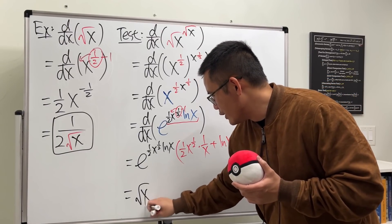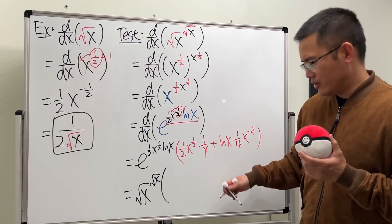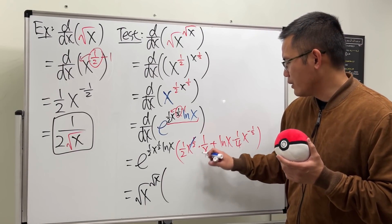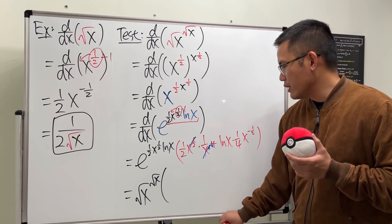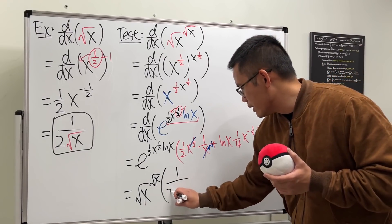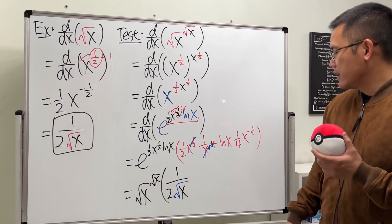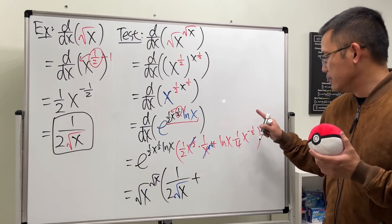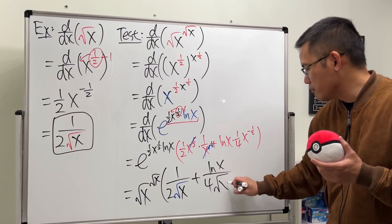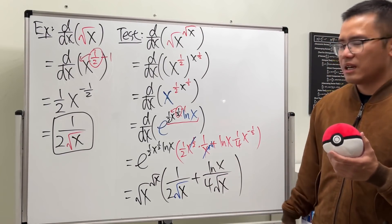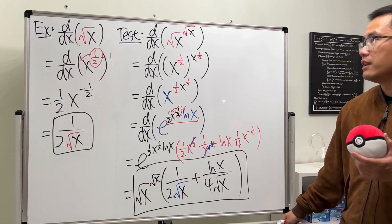All in all, this is just the square root of x raised to the square root of x power. Continuing with cancellation: we get one-over-two x to the one-half — that's the square root of x — for the first term, and then ln x over four times the square root of x for the second term. You can put them together with a common denominator if you like. If you finished this in five seconds, you have an A on the test.